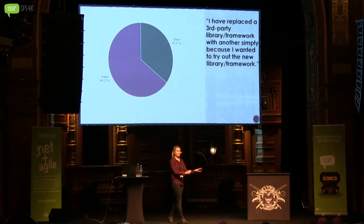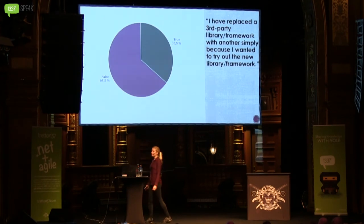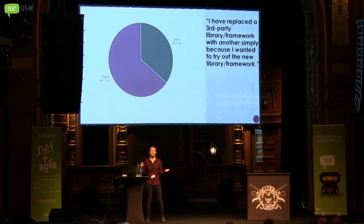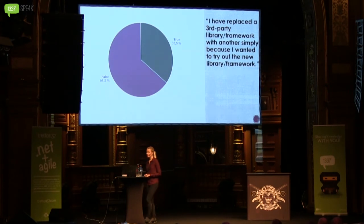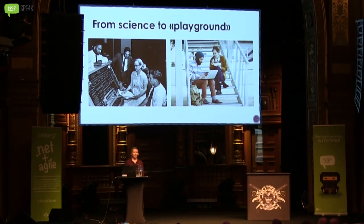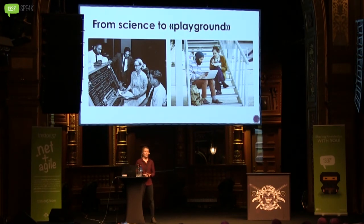So introducing new shiny things in our projects should be done on a strategic level. It should be done by the architect; the project owner should agree. It should not be done because one simple developer wanted to try out something new — we can do that on our own time, on our personal projects. Again, we have forgotten our responsibilities. We have forgotten the science involved in writing code. Instead, we view code as our personal playground. We introduce new frameworks and libraries, introducing unnecessary risk in our projects without considering all of it.